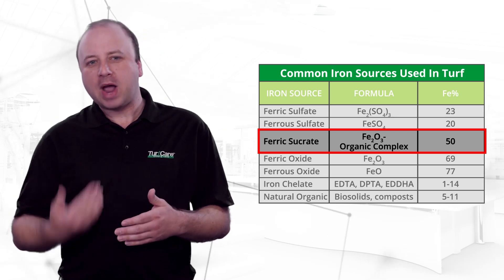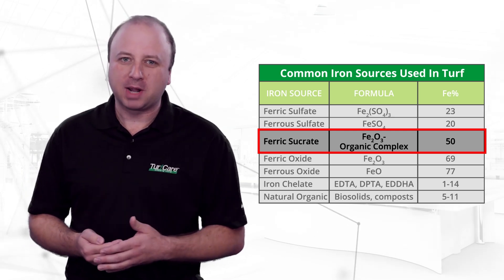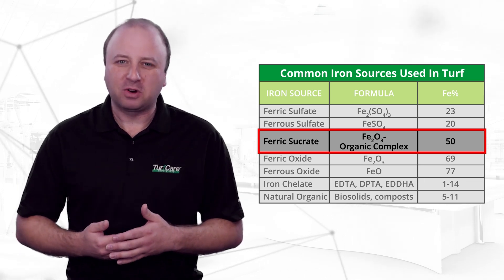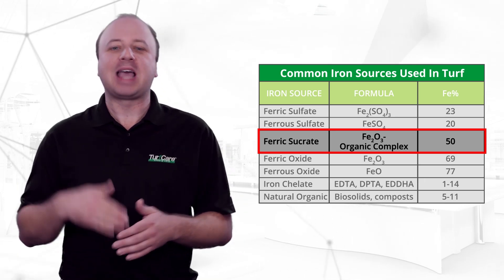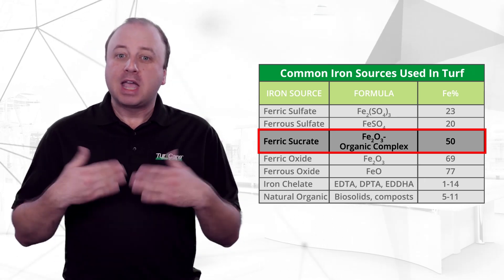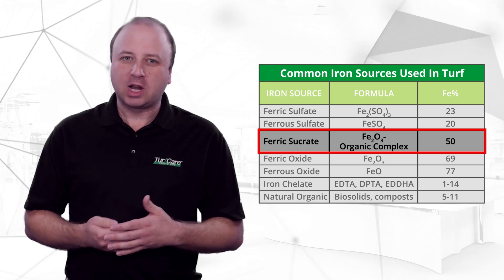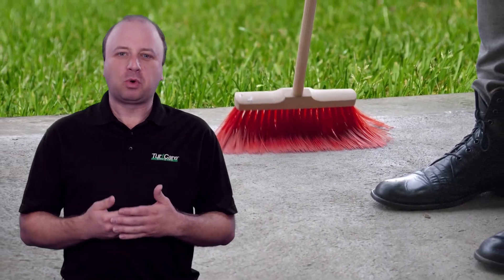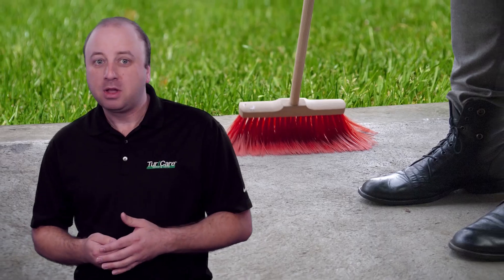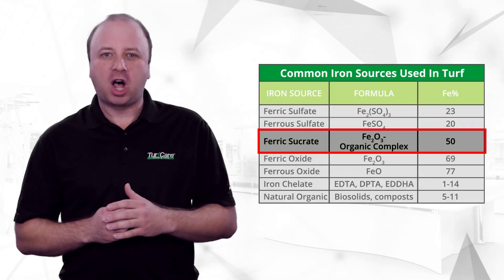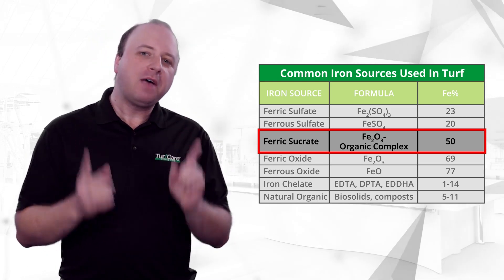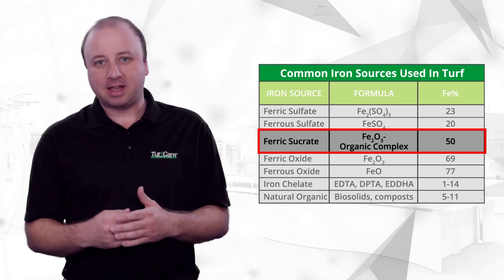In response to problems with staining, the fertilizer industry created iron sucrate, which is essentially a granulated iron wrapped in a sugar coating. Iron sucrates can easily be blended with any fertilizer analysis and spread conventionally. If an iron sucrate granule strikes concrete, it can easily be swept or blown off without causing any staining.